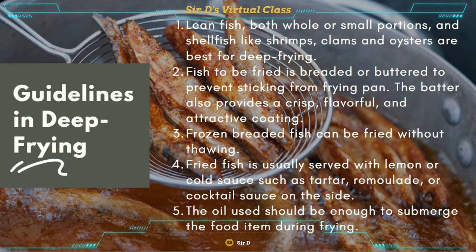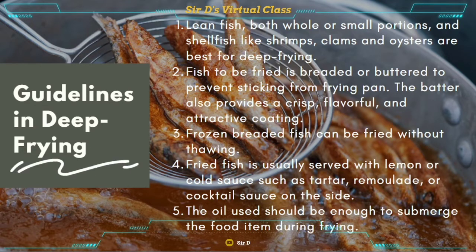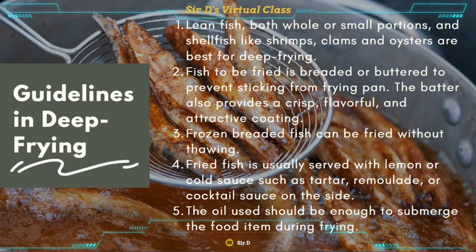Guidelines for deep frying: First, small whole fish or small portions, and shellfish like shrimps, clams, and oysters are best for deep frying. Second, fish to be fried is breaded or battered to prevent sticking and to provide a crisp, flavorful, and attractive coating. Third, frozen breaded fish can be fried without thawing. Fourth, fried fish is usually served with lemon or cold sauces such as tartar, remoulade, or cocktail sauce on the side. Fifth, the oil used should be enough to submerge the food item during frying.